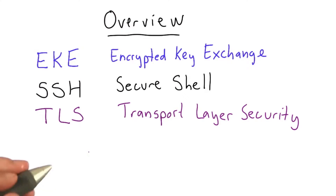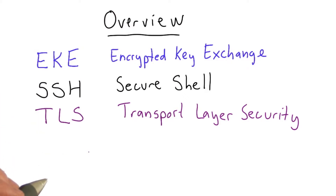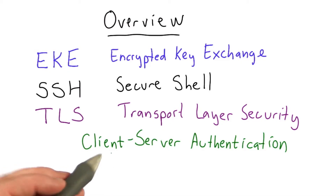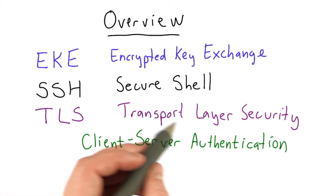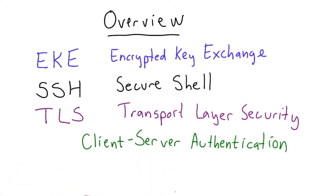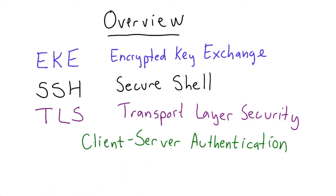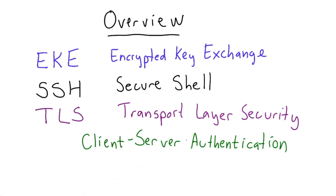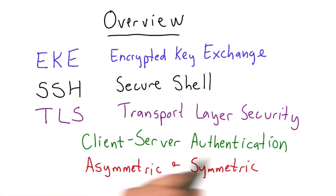All of these have some things in common. They all have the goal of authenticating a client and a server. This could be in either direction or in both directions — to allow a client to know they're talking to the right server, to allow a server to know they're talking to the right client, or to mutually authenticate both parties. And they all involve a mix of asymmetric and symmetric techniques.